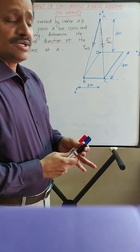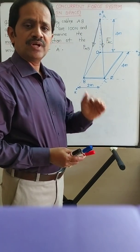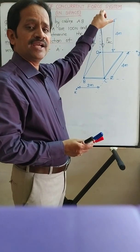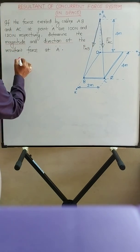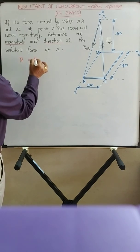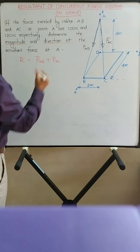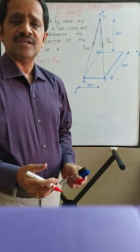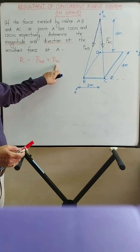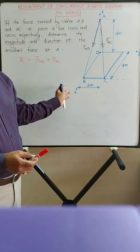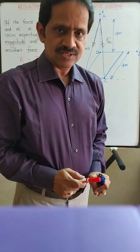These two forces are acting at point A, forming a system of concurrent forces. We have to find the resultant of these two forces. The resultant force is equal to the force in cable AB plus the force in cable AC — the sum of all forces acting at a point is the resultant. To write these force vectors FAB and FAC, you must write the unit vectors, and for the unit vectors you must know the position vectors, and for position vectors you must know the coordinates of the points.